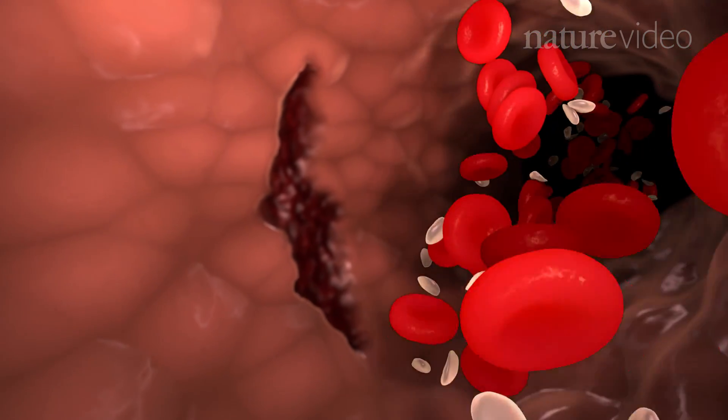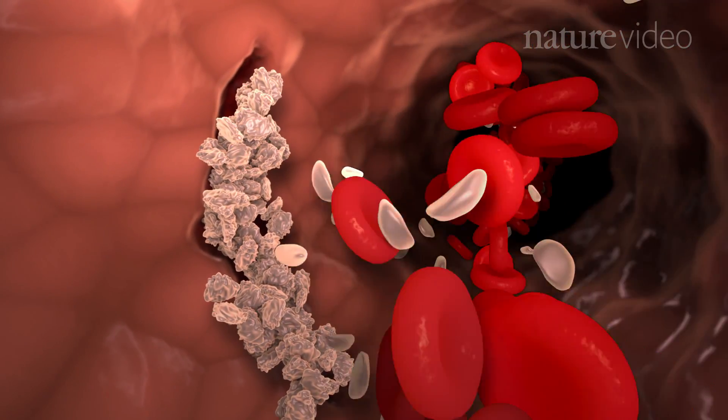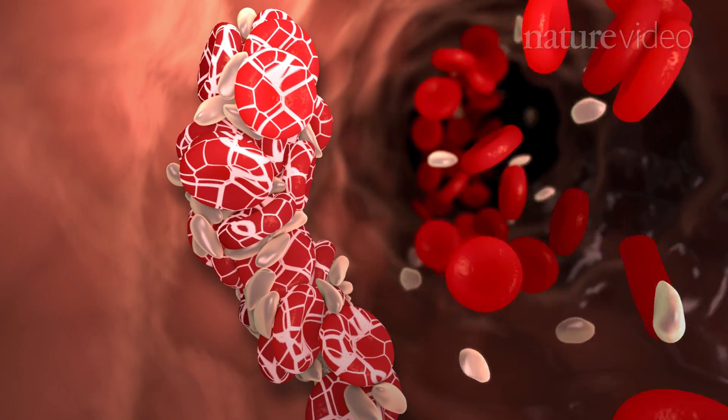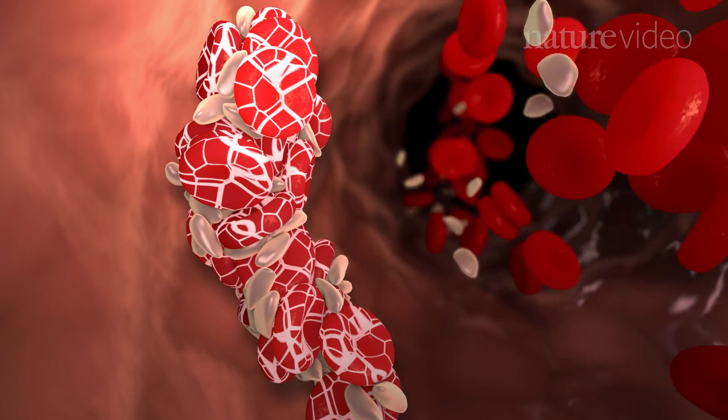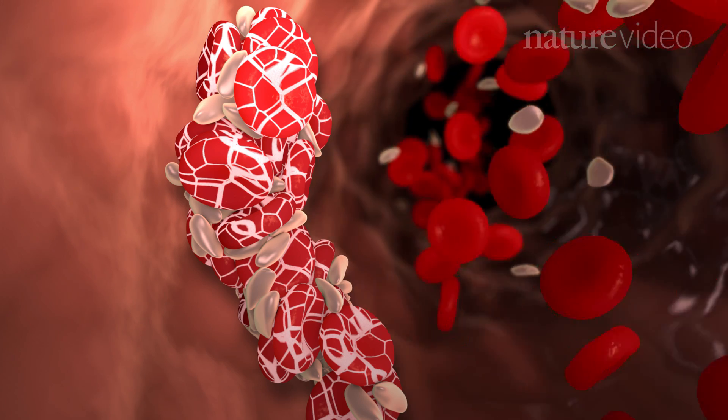Thrombosis is the formation or presence of a blood clot within the circulatory system. Blood clotting can be useful, as it prevents excessive blood loss when a blood vessel is injured, but clots can also form when they aren't needed and cause serious medical problems. Let's look at three such problems.